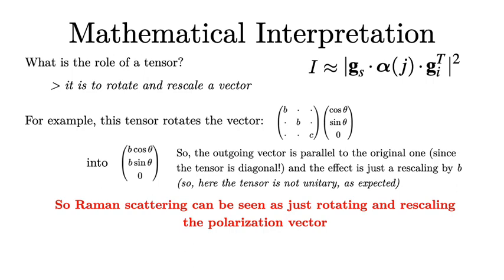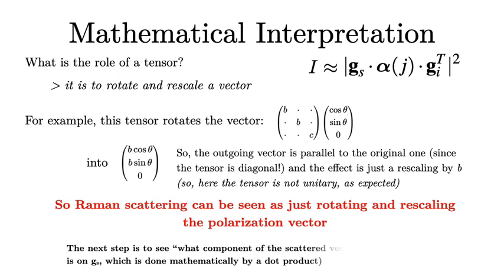Raman scattering can be seen as a machine — a black box described by a tensor — and the only thing it does is rotate and rescale the vector. The final step is to see what component of the result projects onto Gs via the dot product, and that gives you the amplitude of Raman. This is actually beautiful, because if you get this, everything can be done graphically. To make sure the ideas are clear, let me explain first the effect of parallel polarization on the A mode. Parallel polarization means that Gi and Gs are parallel — that's exactly the case here with (cos theta, sin theta, 0).